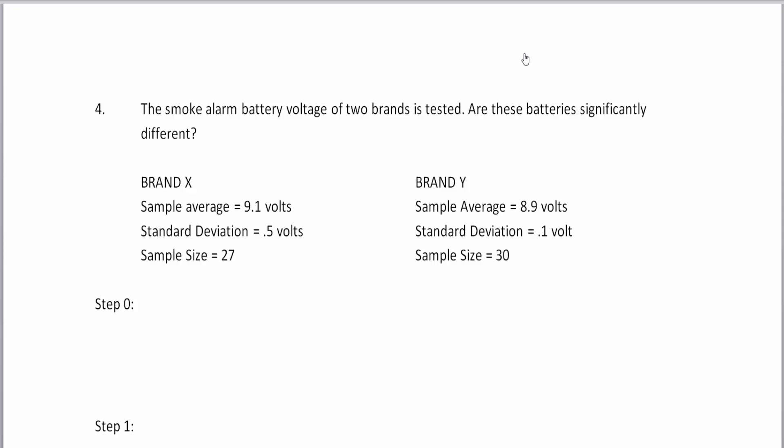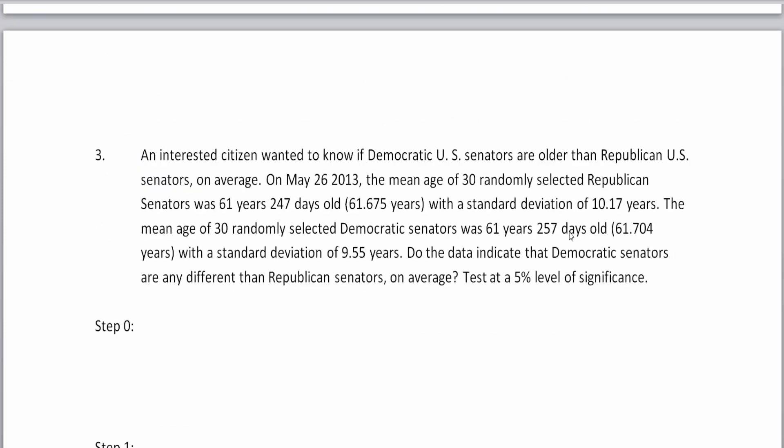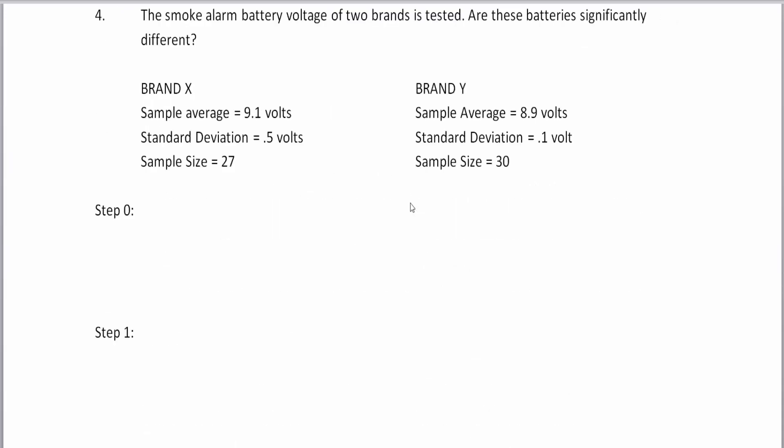All right, before we do our final two two-sample z-tests, I have a quick addendum for the previous video. In the previous video, I had accidentally typed in my calculator 61.705 instead of 61.704 for the standard deviation of the second sample group. That did not change step three to the degree that it really affected the value because we still have a p-value of 99.09. It's just that the z-value was a little bit different. I'm not going to go back and reshoot that whole thing because the answer stays the same, but just always be careful when typing in your data, and I'll try to do so going forward.